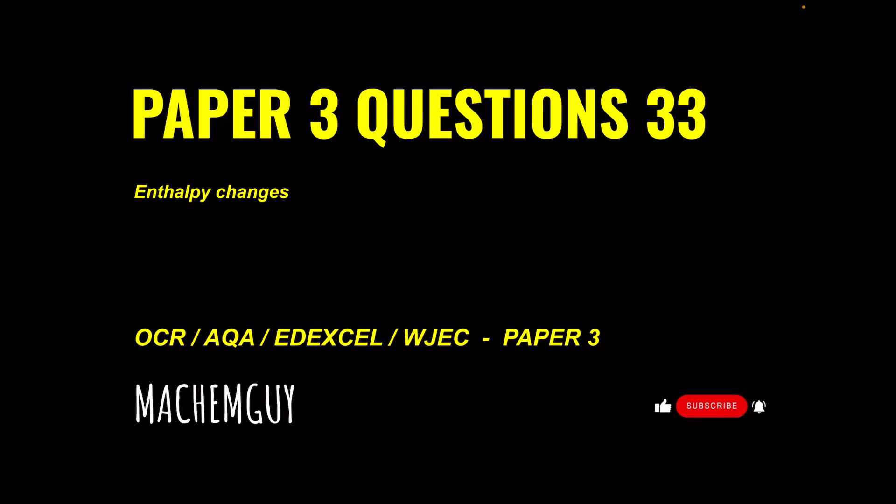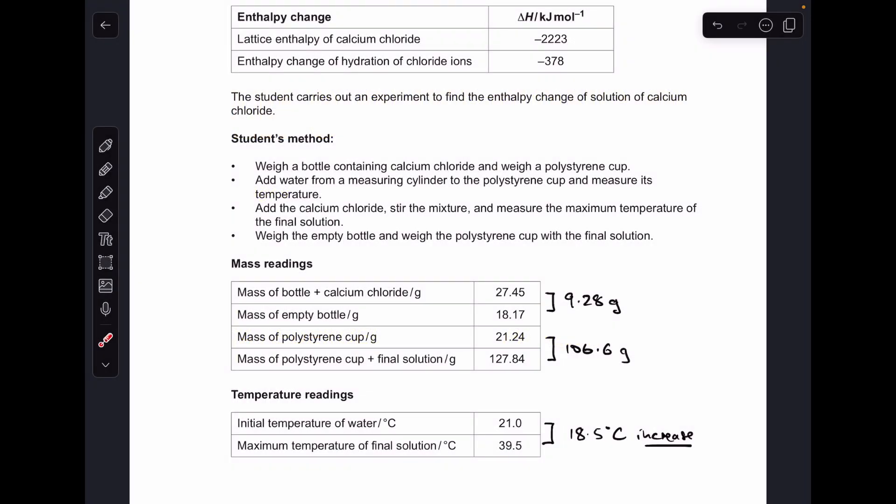So the first thing I've done is just process the mass readings and temperature readings. The mass of calcium chloride that's been used is the difference between these two numbers, so 9.28 grams. The mass of the solution that's been heated up is the difference between these two, so that's 106.6 grams.